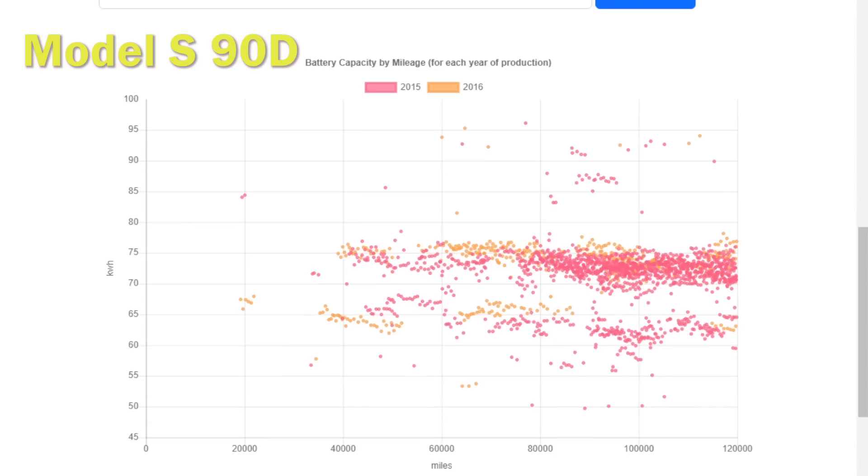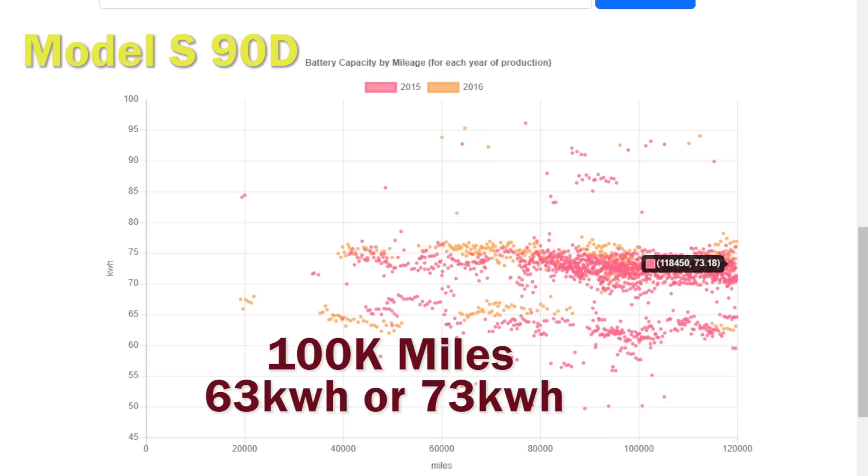The next battery we're going to have a look at is the 90D, and almost exactly the same things happening here. There are two cohorts of batteries. A lot are holding on to the high capacity of 73 kilowatts, there's a bunch at 63 kilowatts. Now the 90D was criticized originally for having quite a fast early degradation, but at 50 or 100,000 miles it's still holding on to a reasonable amount more battery capacity than the 85D.